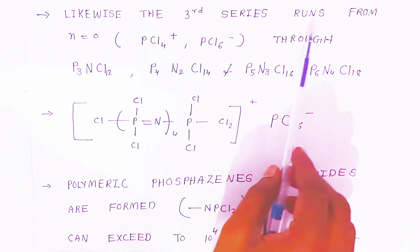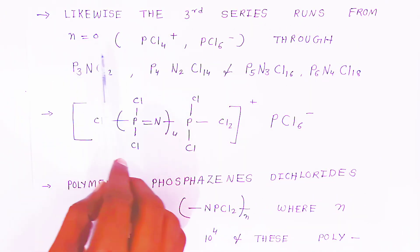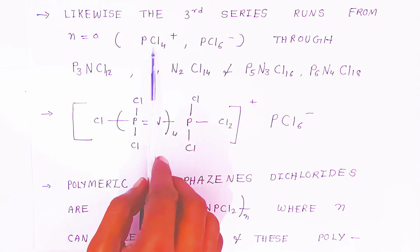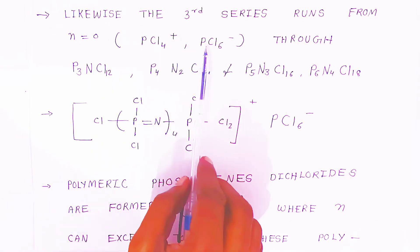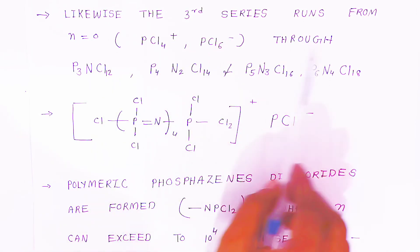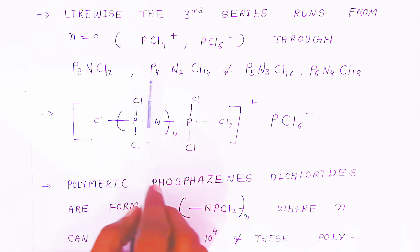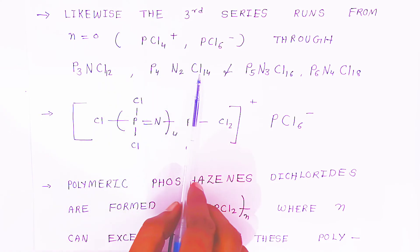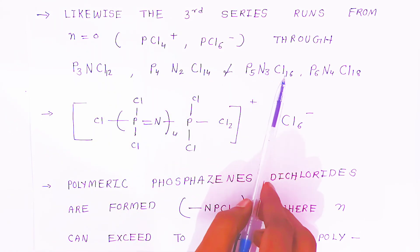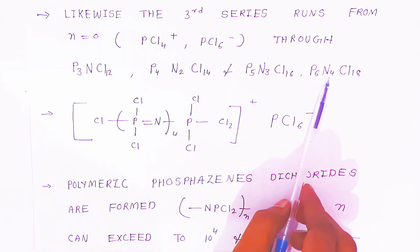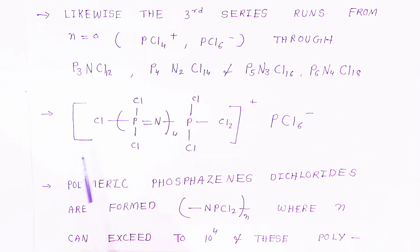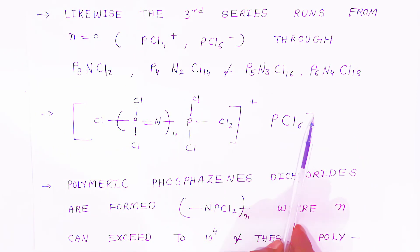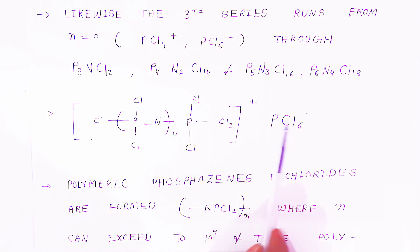The third series runs from n=0, giving PCl4+ and PCl6- ions. Further members include P3NCl12, P4N2Cl14, P5N3Cl16, and P6N4Cl18. These ionic Phosphazene compounds exist in salt form with a cationic phosphazene part and chloride anion outside.